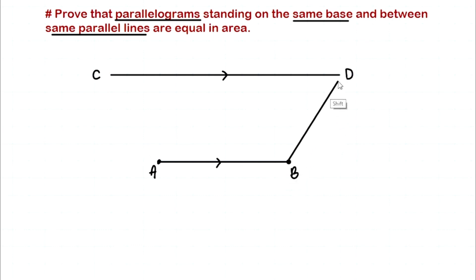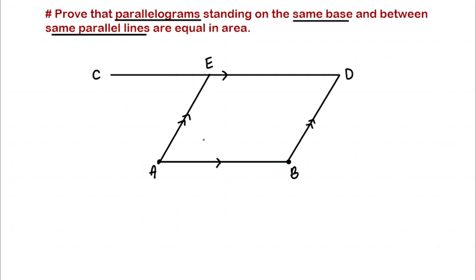So our parallelogram would look something like this. This is one parallelogram — let's name this point E. So we have parallelogram ABDE standing on the base AB, and it is between the parallel lines CD and AB.